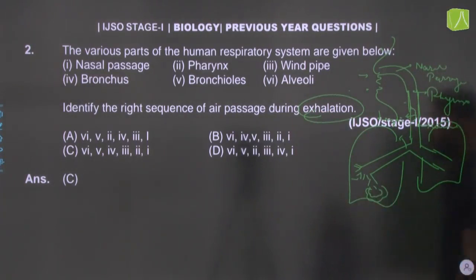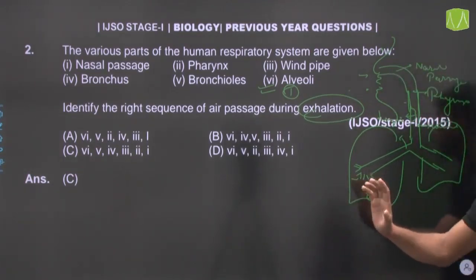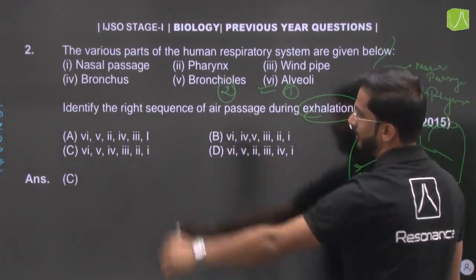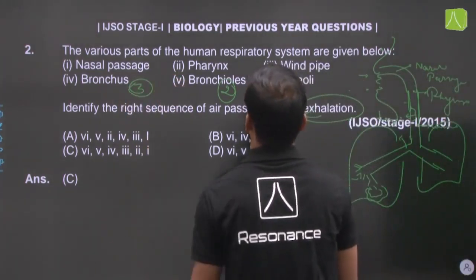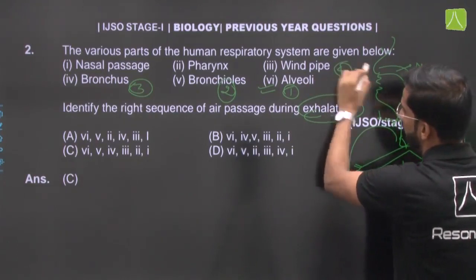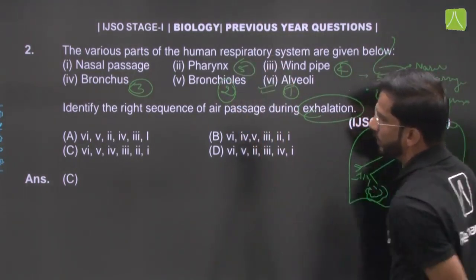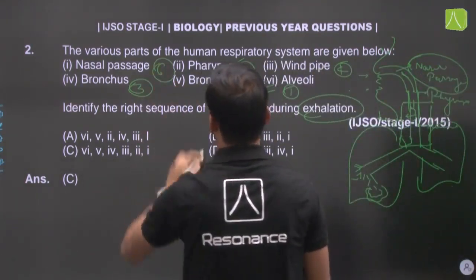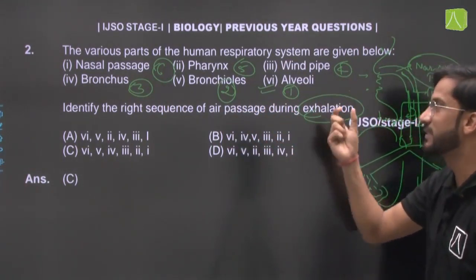For exhalation we take the reverse order. Starting from alveoli, then bronchioles, then bronchi, then windpipe, then larynx, then pharynx, then nasal passage. So the correct sequence for exhalation is: first alveoli, second bronchioles, third bronchi, fourth windpipe, fifth pharynx, sixth nasal passage.